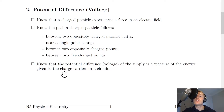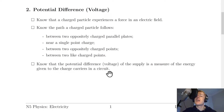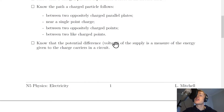Lastly for section two, you need to know that the potential difference — i.e. the voltage of the supply (the battery) — is a measure of the energy given to the charge carriers in a circuit, and the charge carriers are the electrons. This is the definition of voltage or potential difference you need to know. Another way of thinking about it: one volt is equal to one joule per coulomb.